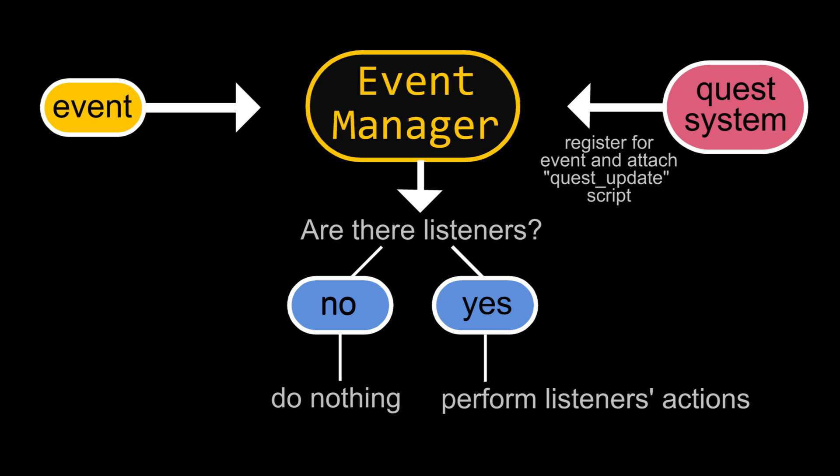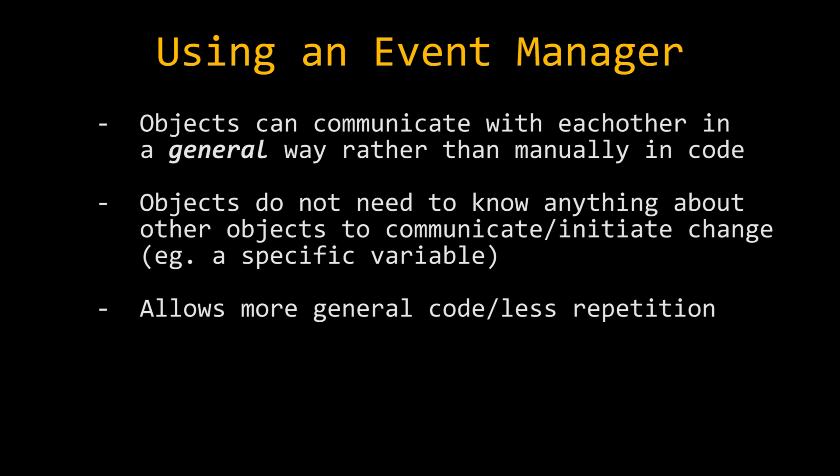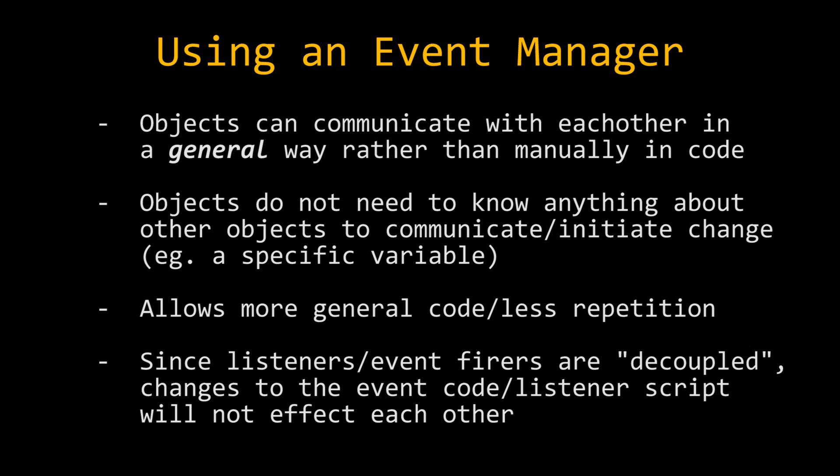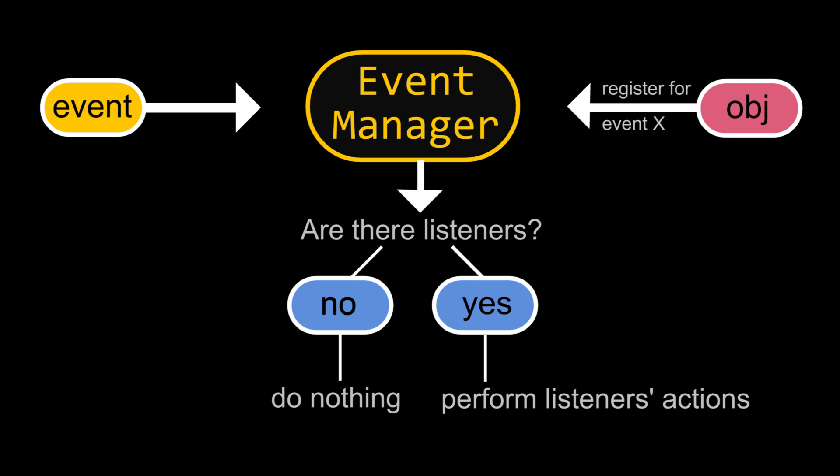That way we've completely decoupled the event from the listener. The player object will no longer need to access the quest system or know anything about it. We don't have to know any of the quest system's variables or functions — we just need to tell it that our event was performed and it will go off and do its own thing. This makes our code a lot easier to maintain. We're not going to have any repeated code, it's going to be kept in one place, and making changes to one thing isn't going to affect the other. So this is going to be the basis of our event system.